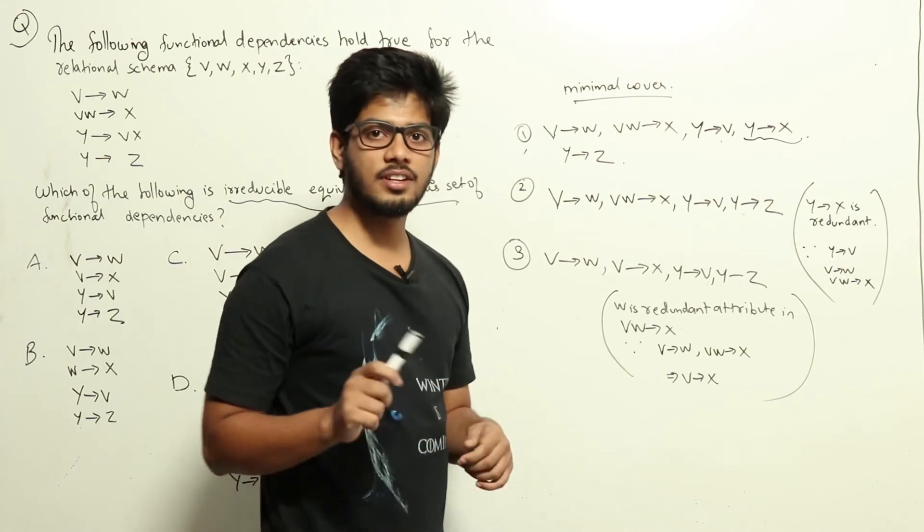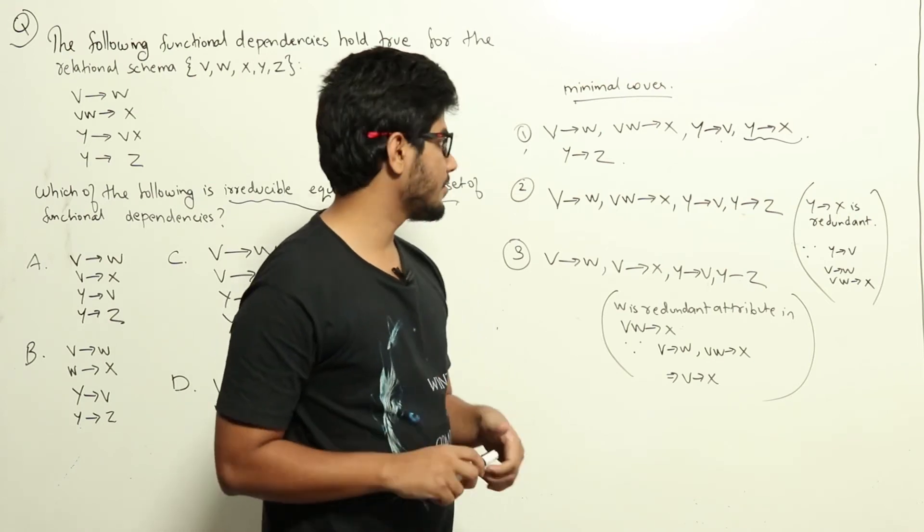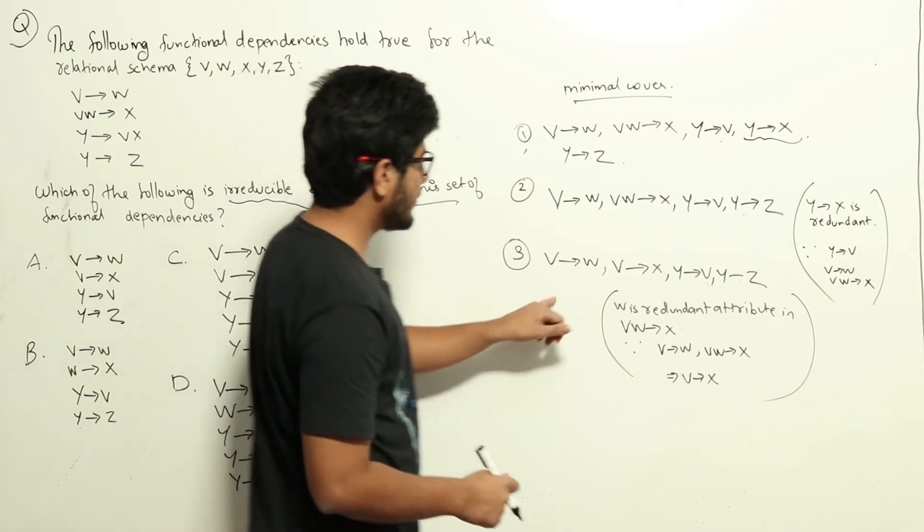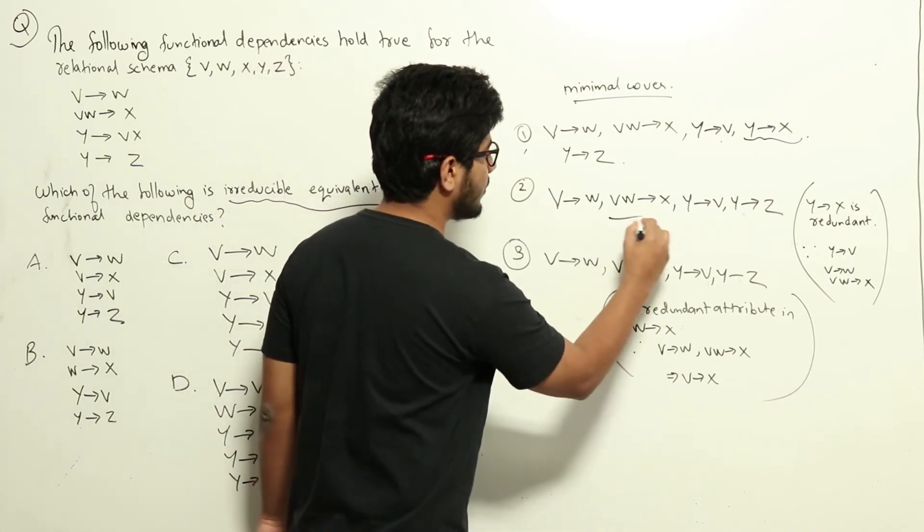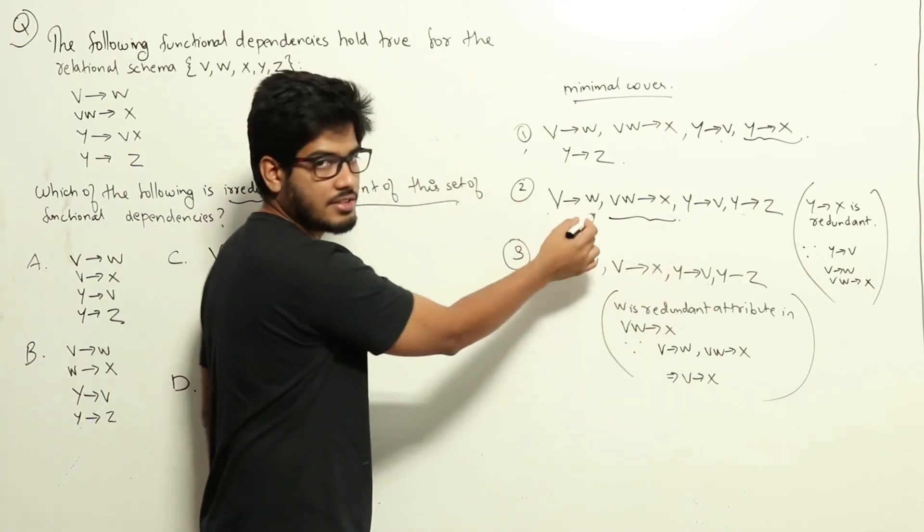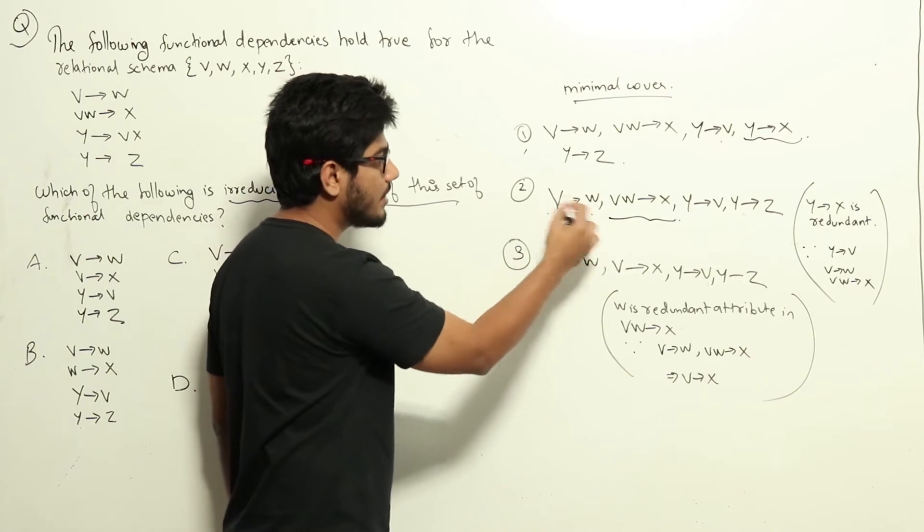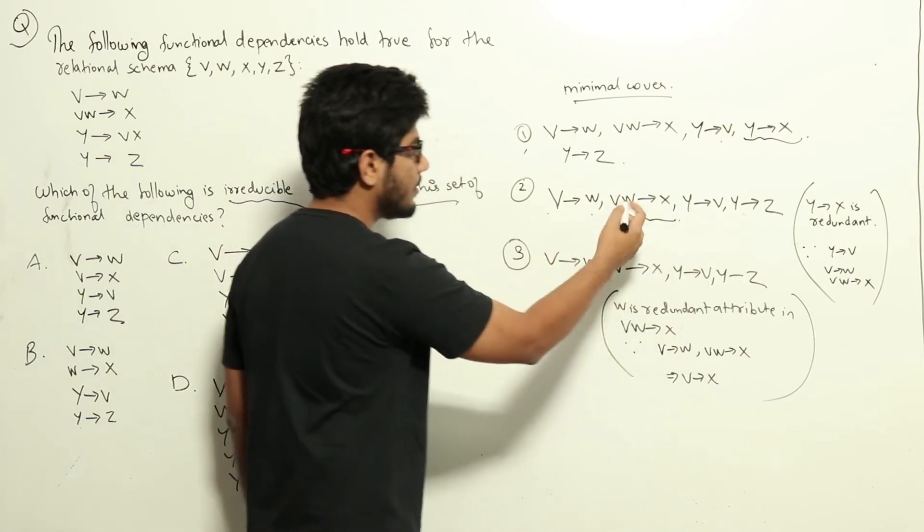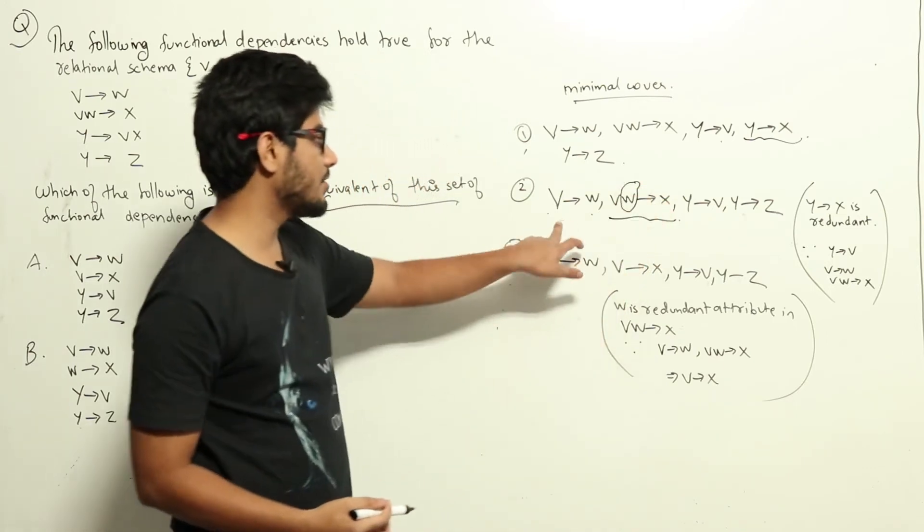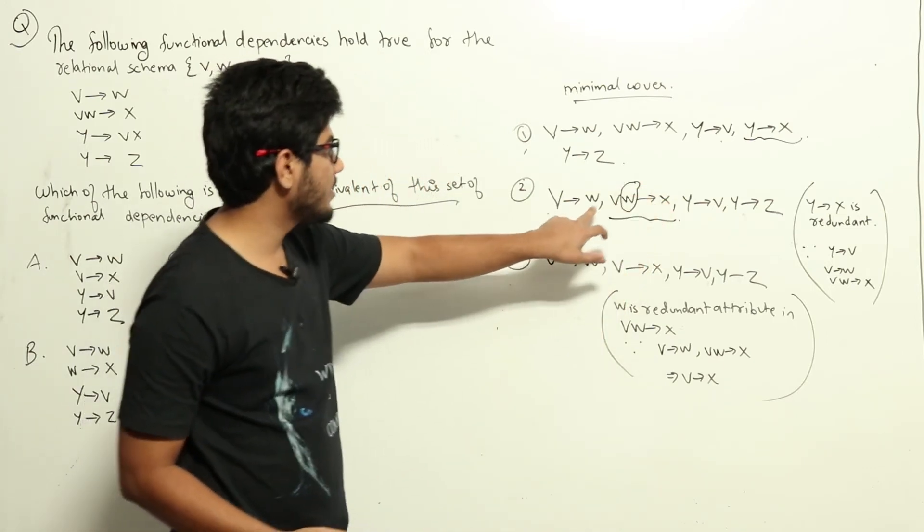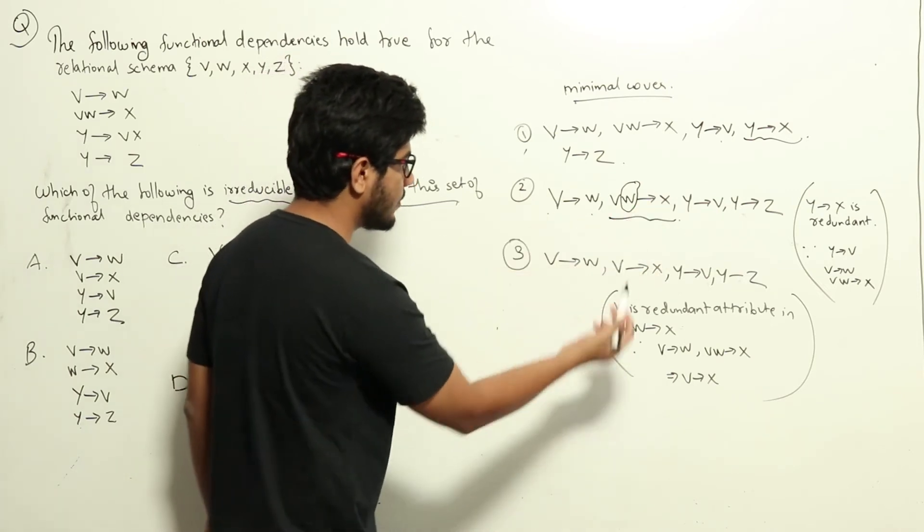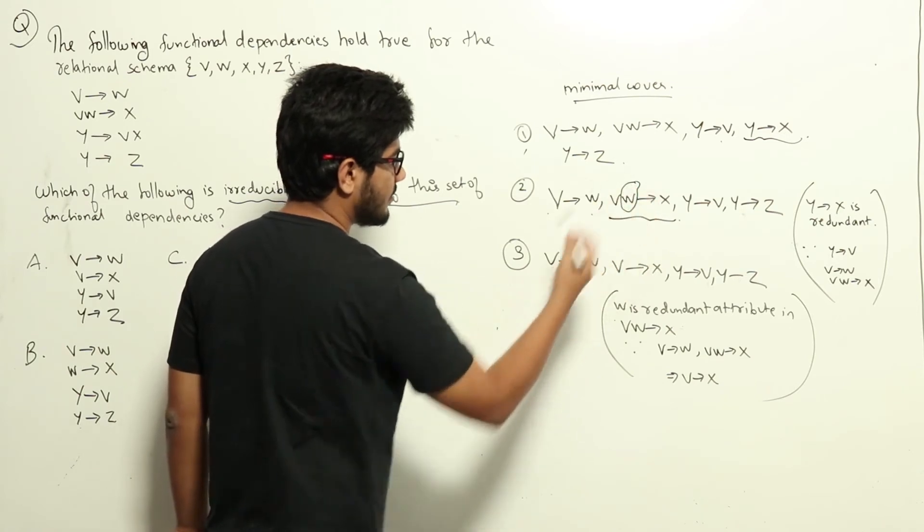In the third step, we need to remove redundant attributes from the functional dependencies. Let me show you an example. Take VW gives X. We already have V gives W, so V and W together can give X. We don't need to write W here; it's redundant because V gives W already, meaning V alone can give X also. So we can remove W from this functional dependency.